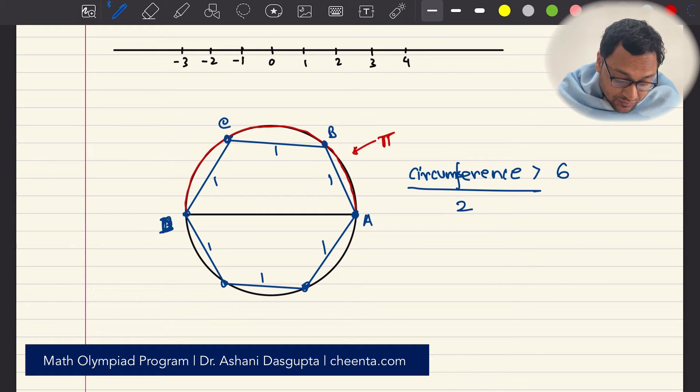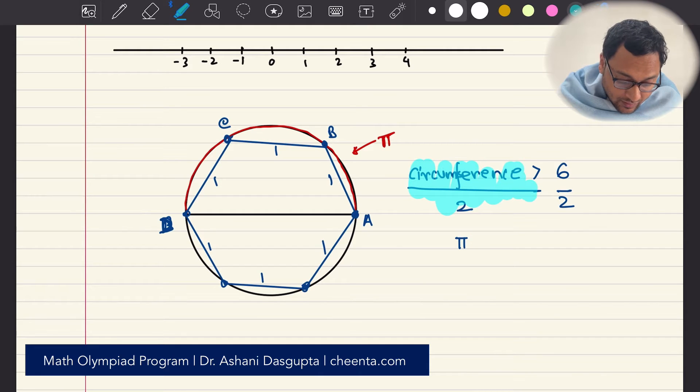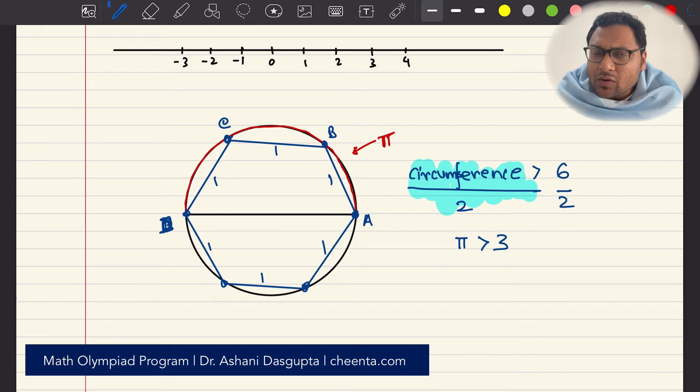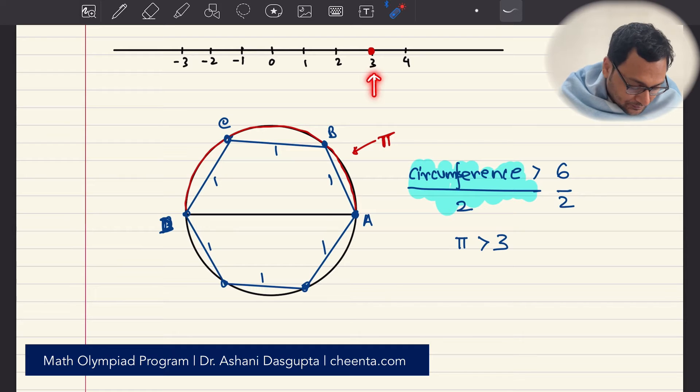Or circumference by two is greater than six by two. So pi, which is defined as circumference by two, is greater than three. So what we did is an approximation of the value of pi. We found that the value of pi is greater than three. So we are here now in the number line. And pi is somewhere here on the right of the number three. So what we are doing is we are approximating pi from the left.